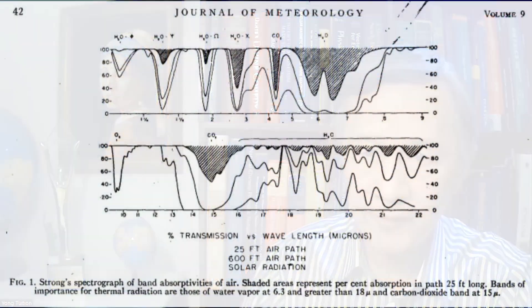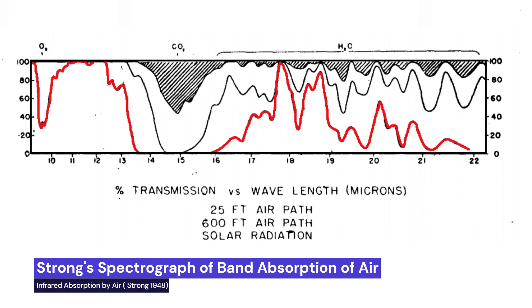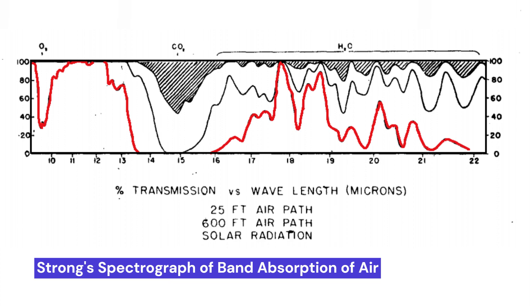Subscribe, share and make a comment. Thank you very much. Let's go and have fun. I first knew John Strong when I saw this infrared absorption spectra of the atmosphere of the Earth. It was reported by Strong internally in 1948, but this diagram was publicly used by Brooks, another greenhouse effect believer. The shaded area represents the absorption by water vapor, CO2 and ozone measured in lab, while the red color curve was measured from the real atmosphere by using the sun as a radiation source.